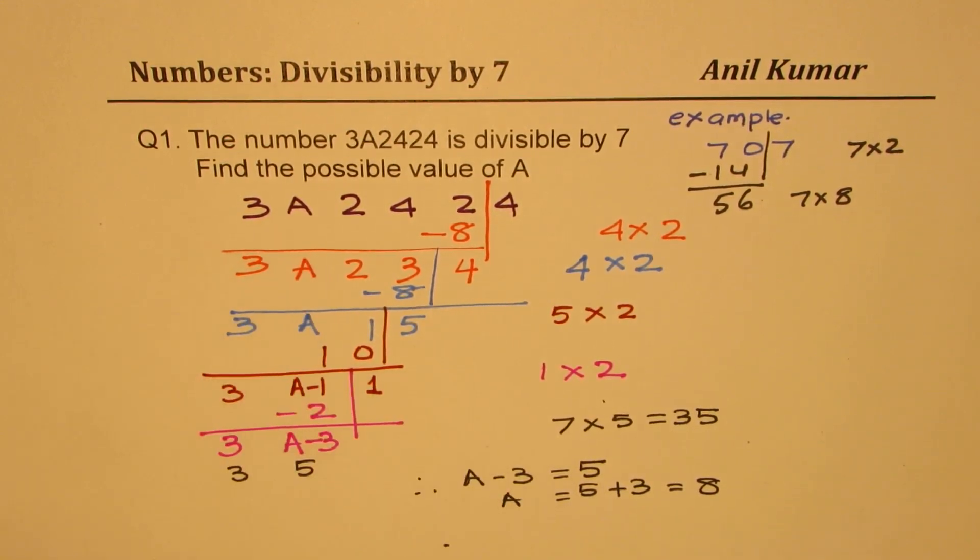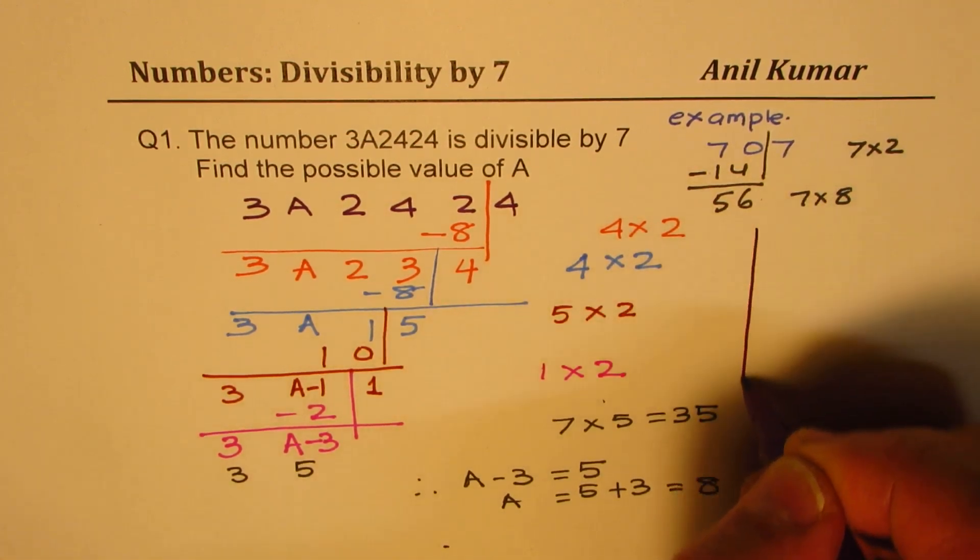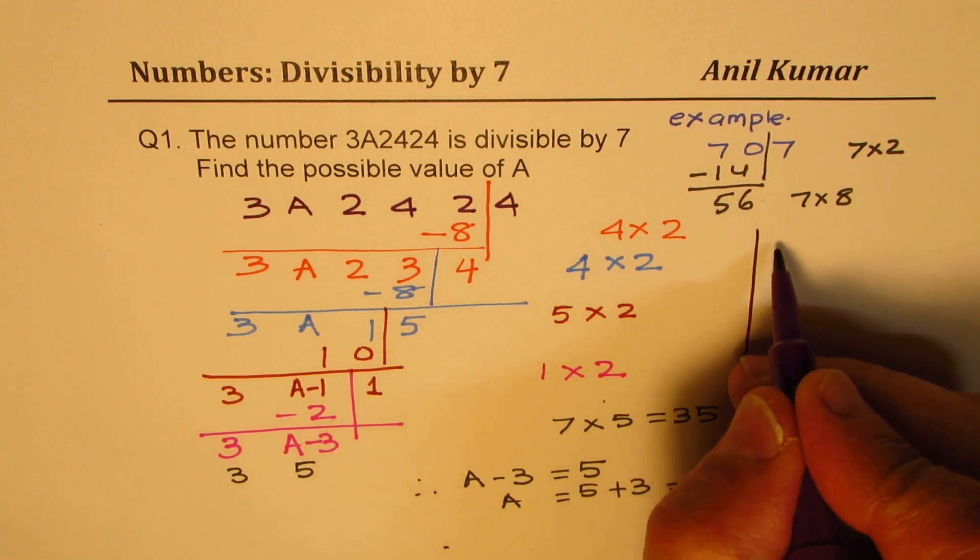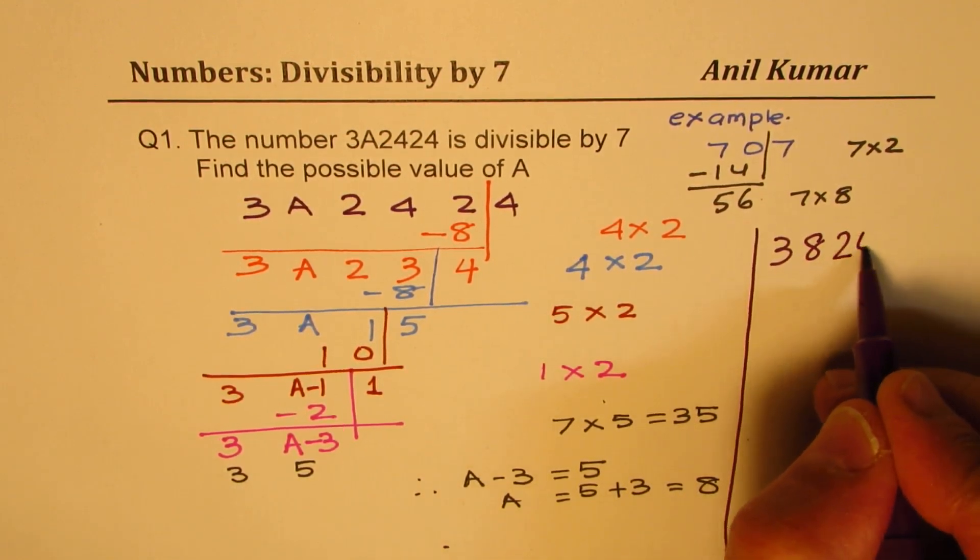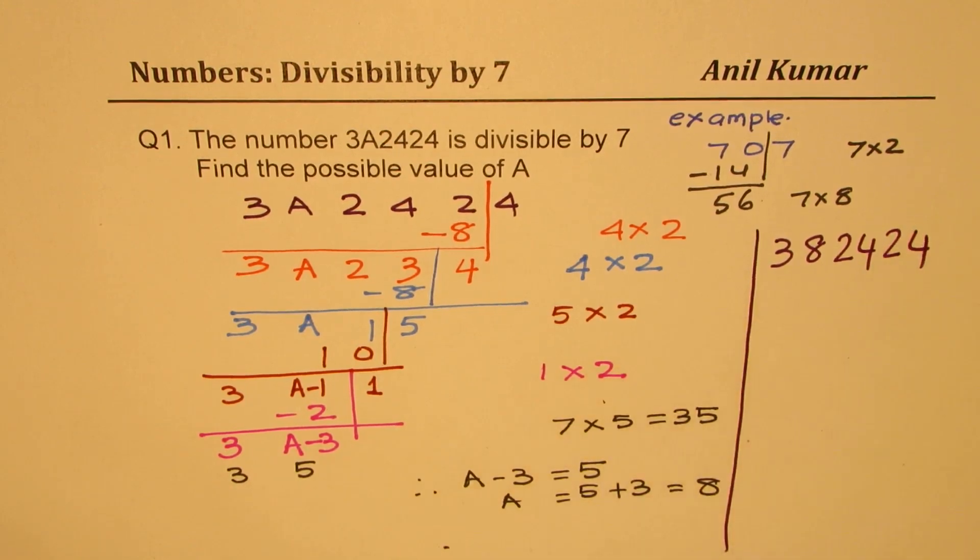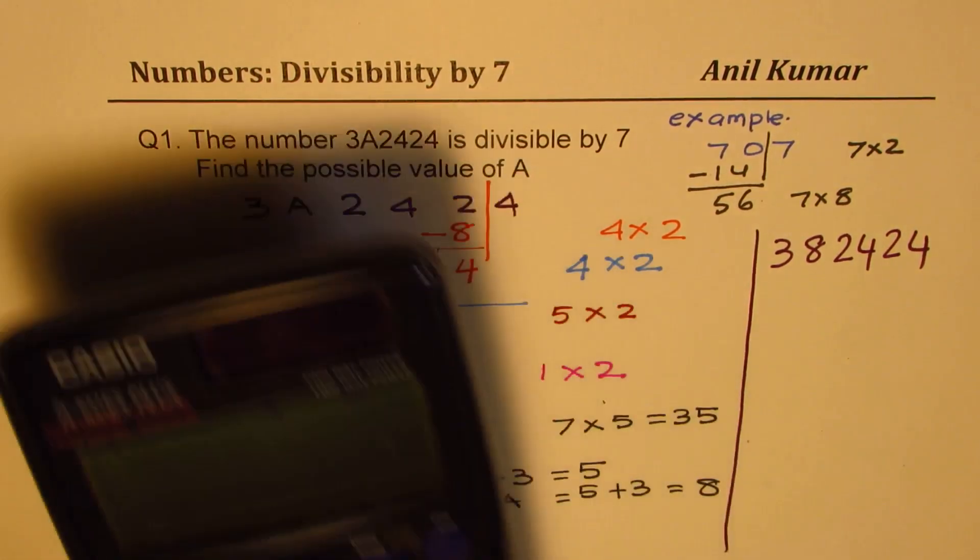So we get our solution that A should be 8. And therefore, the number should be, let me rewrite the number now, 382424. Let us check if this is divisible by 7.